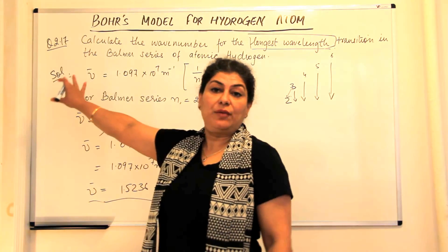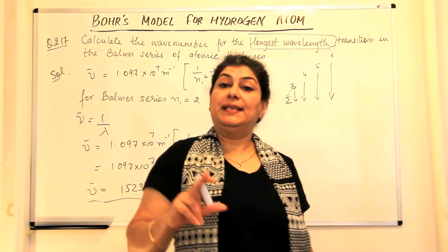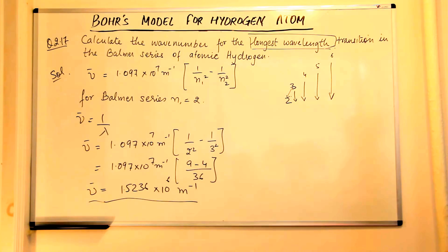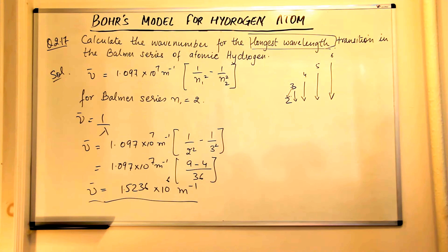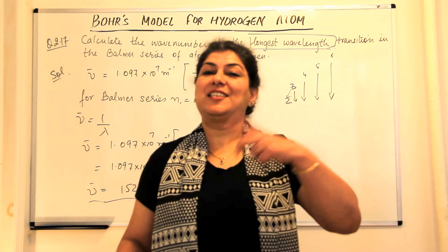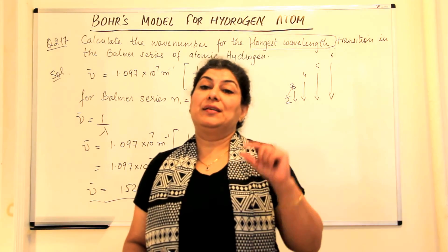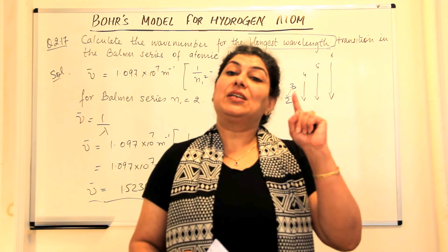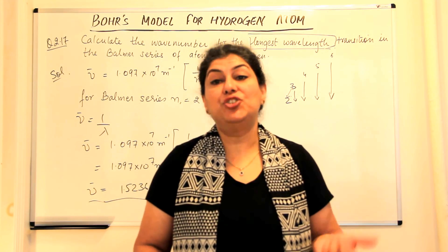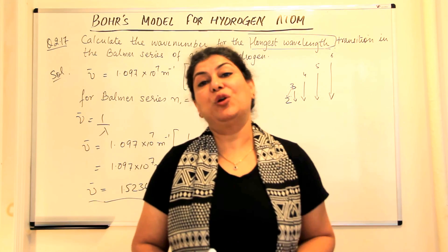In the next question, question number 2.18, although I'm not going to solve it, I'd like you to do it — there is again a catch. The question asks: what is the energy in joules required to shift the electron of the hydrogen atom from the first Bohr's orbit to the fifth Bohr's orbit? And what is the wavelength of the light emitted when the electron returns to the ground state? The energy of the ground state is given as minus 2.18 × 10⁻¹¹ Ergs. The trick is that the energy is given in Ergs but asked in joules. One Erg is 10⁻⁷ joules, so all you have to do is convert it into joules and then solve the question.